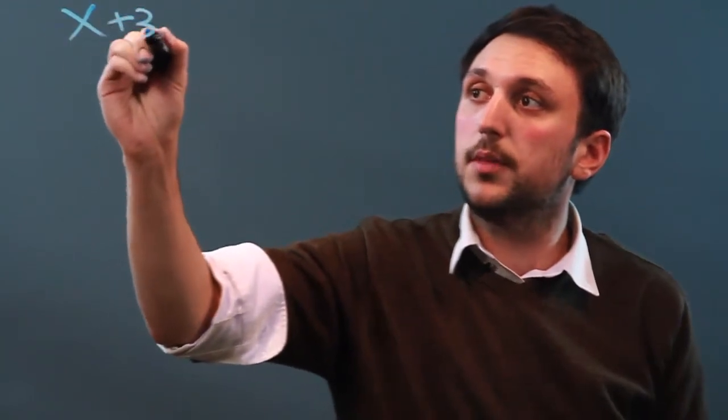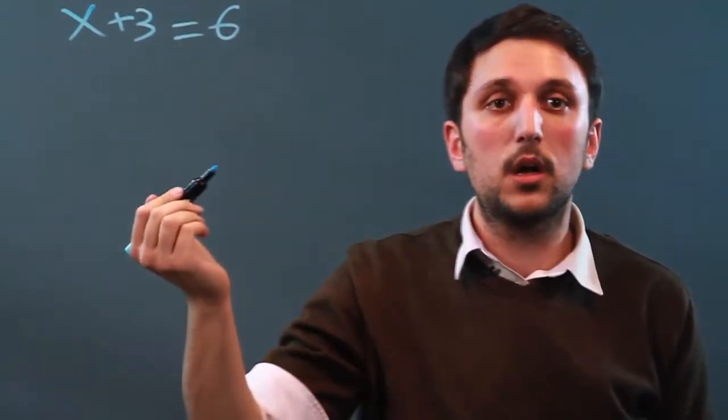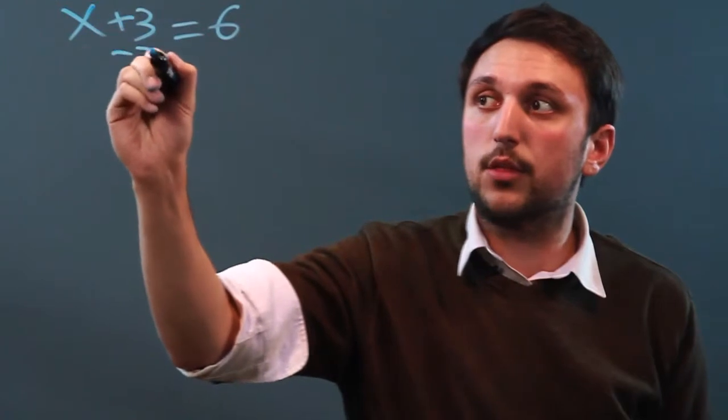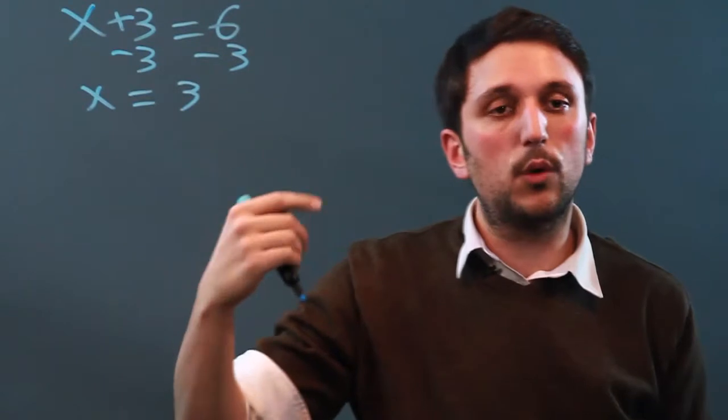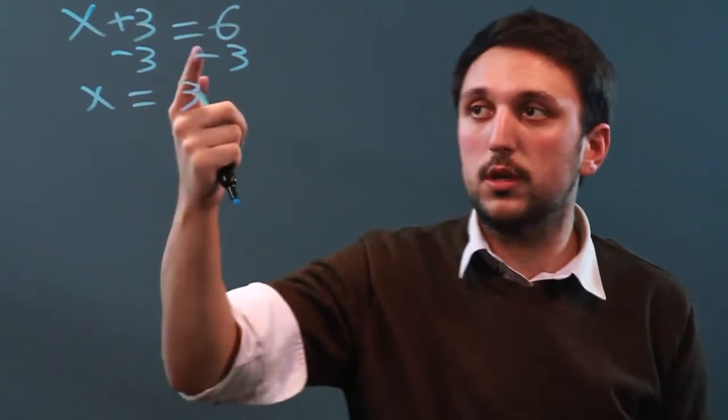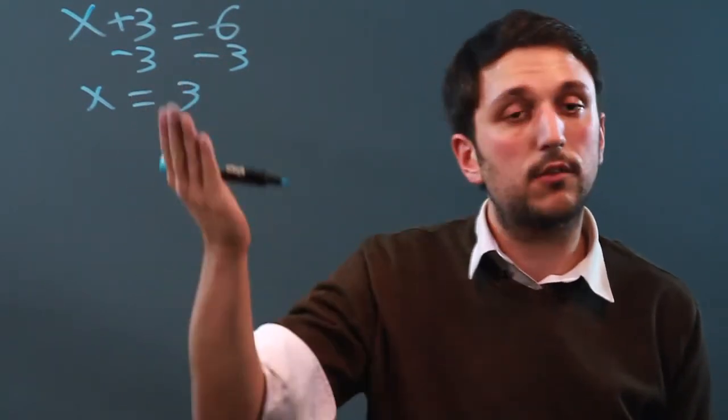Let's start with one variable problems. Now, with an equation like x plus 3 equals 6, all we have to do is subtract the 3 from each side and we get x equals 3. So with a one variable problem, the solution is usually very easy or at least straightforward.